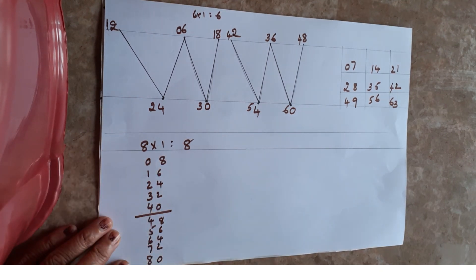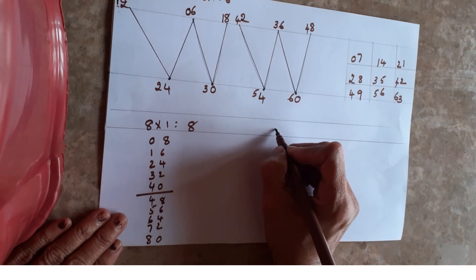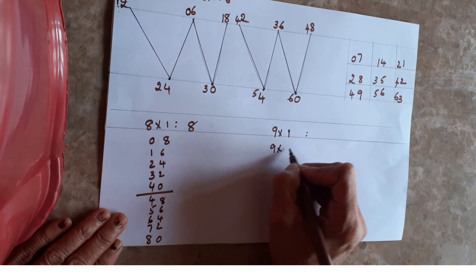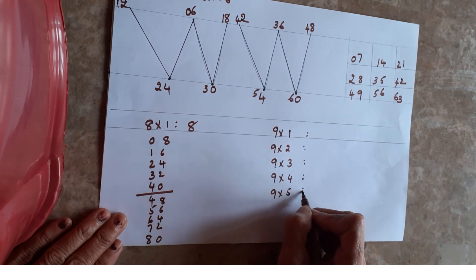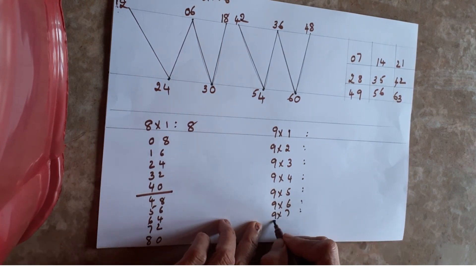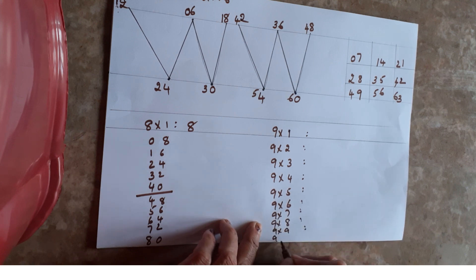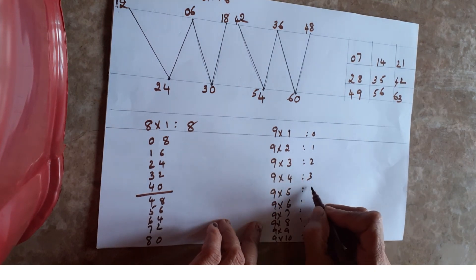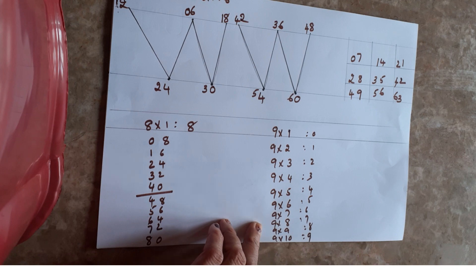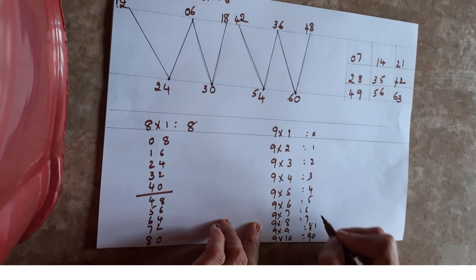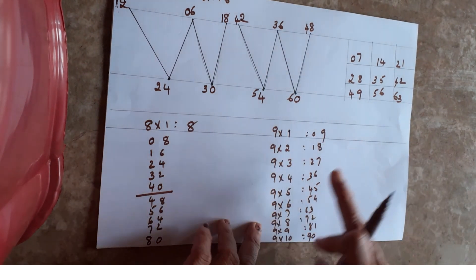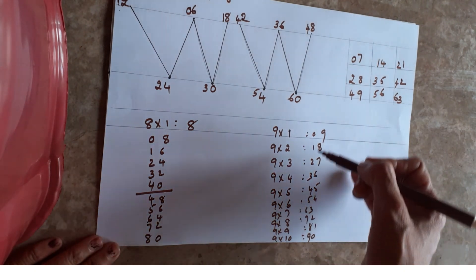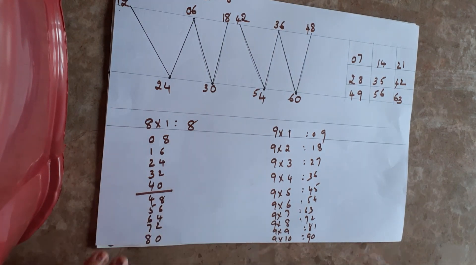The 9th table is even more simple. Just write one, two, three, four, five, six, seven, eight, nine in order — then write the reverse order: zero, one, two, three, four, five, six, seven, eight, nine alongside nine, eight, seven, six, five, four, three, two, one, zero. You will get the 9 table: 9 ones are 9, 9 twos are 18, 9 threes are 27, 9 fours are 36, and it goes on like this.